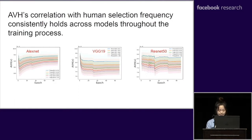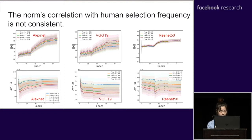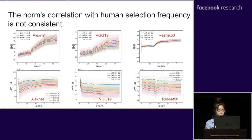Diving deeper, we split the test set into five levels of human visual hardness. The blue ones correspond to the hardest examples for humans, and the purple lines correspond to the easy ones. The AVH gaps between different human selection frequencies are very consistent across all models during the whole training process, further corroborating that AVH is a more generalizable proxy to human visual hardness. In contrast, the norm correlation with human selection frequency is not consistent. In ResNet-50, the norm of samples with different human selection frequencies converges to the same value by the end of training, so it cannot serve as a human visual hardness indicator.